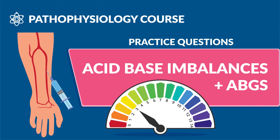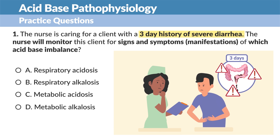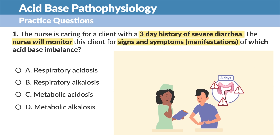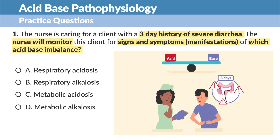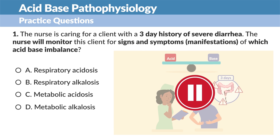Now, switching gears to the practice questions on acid-base physiology. Number one: the nurse is caring for a client with a three-day history of severe diarrhea. The nurse will monitor this client for signs and symptoms, or manifestations, of which acid-base imbalance. Go ahead and pause the screen and try your best to answer this question in about 60 seconds or less.